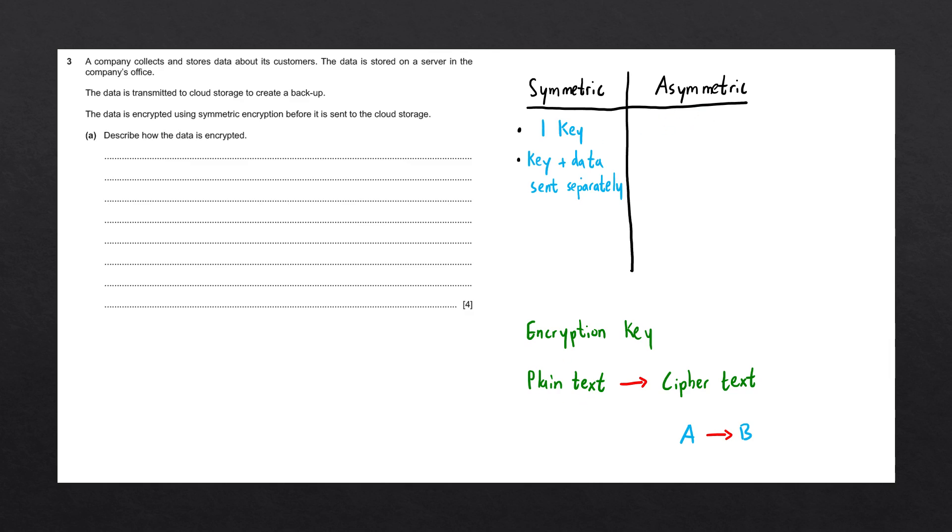Asymmetric encryption solves this issue. It does this by using what's called a public and a private key pair. Let's explain how asymmetric encryption uses this public and private key to send data between computer A and computer B. Initially, computer A generates a public and private key pair. This public key can be used to encrypt plain text. The private key can be used to decrypt ciphertext that has been encrypted using the public key.